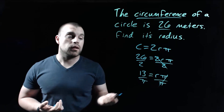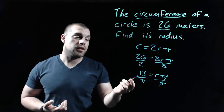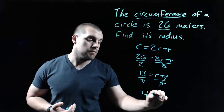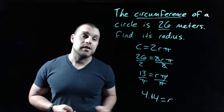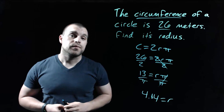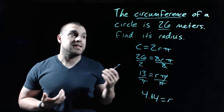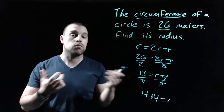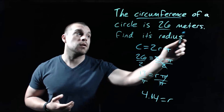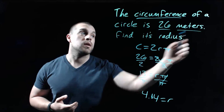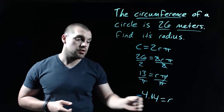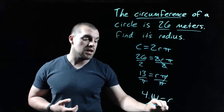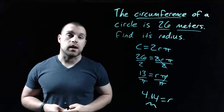We'll need our calculator for this part — 13 divided by pi gives us about 4.14 as our radius. This is a distance; we're measuring how far the radius is, so we should throw a label on here. We were measuring meters, so this would be 4.14 meters for the radius length.